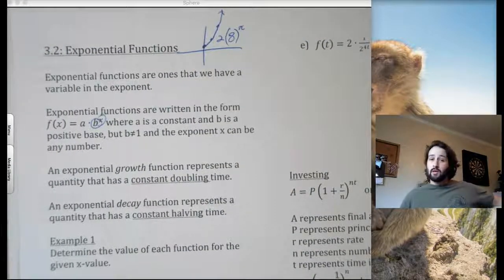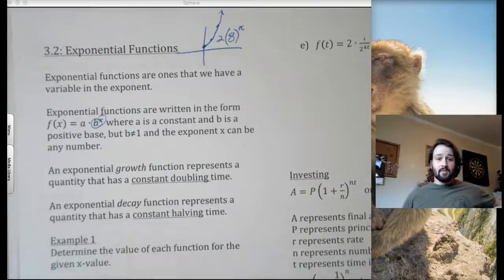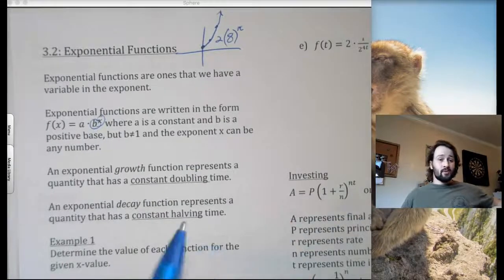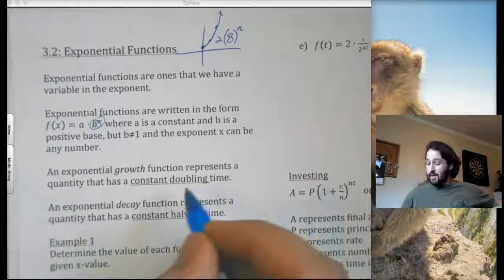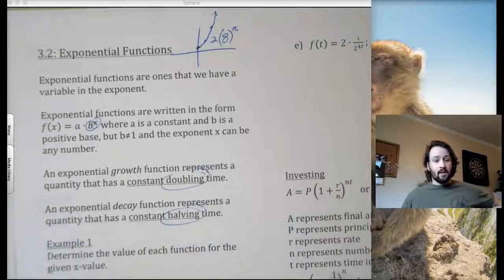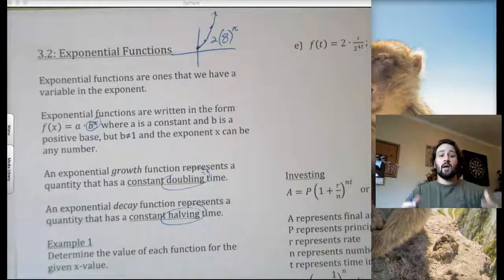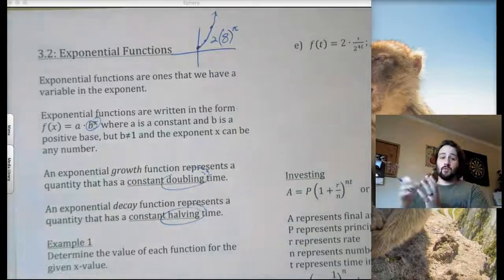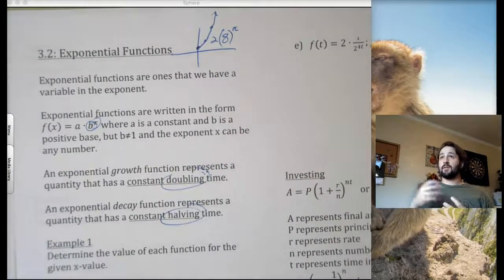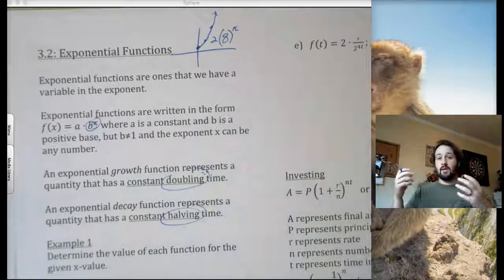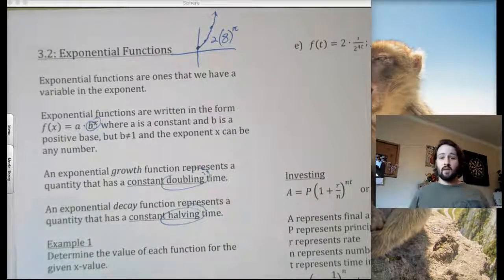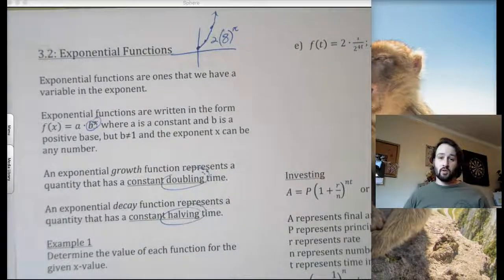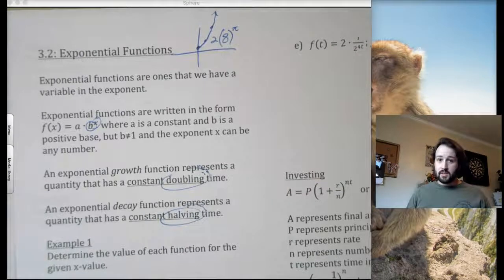It can be growth or it can be decay. Growth has a constant doubling of time. Decay has a constant halving of time, or thirding of time. Really, I don't know why they make you say doubling or halving. It's really whatever. But it has to have the constant pattern, like constantly tripling or constantly halving or constantly one-fourthing or constantly something. It can't start to change and fluctuate. Then it no longer becomes an exponential function.